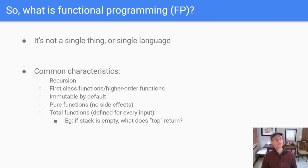So what's going on with functional programming? That's the whole thing that we're trying to talk about here. Functional programming, it turns out, is not a single thing or single language. People who are more FP experts than me have decided that here are some common characteristics. Includes recursion, first class functions, higher order functions, immutable data by default, pure functions, that is ones without side effects, total functions, that is ones that are defined for every input.